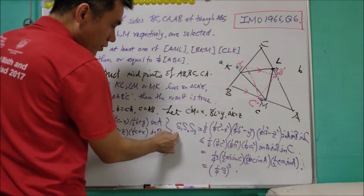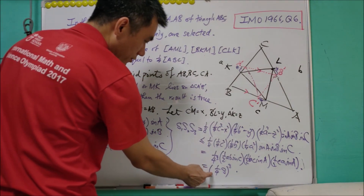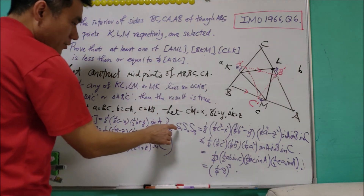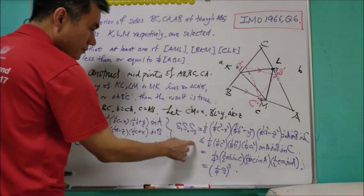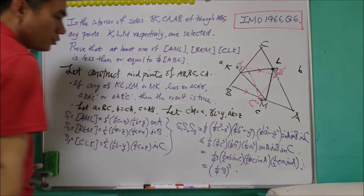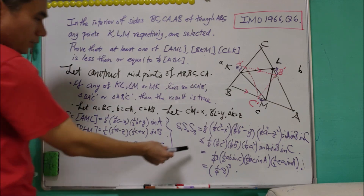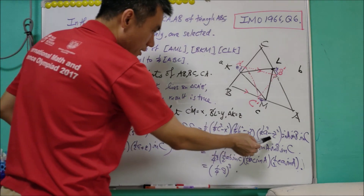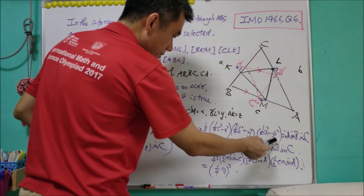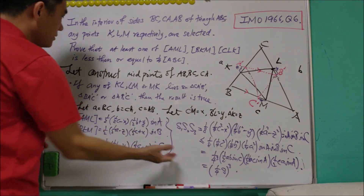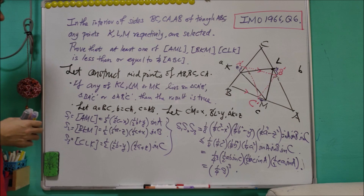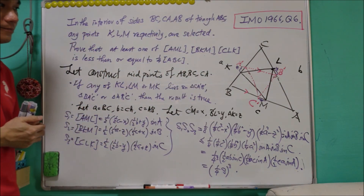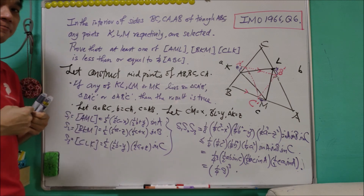Since the product s1 times s2 times s3 is less than or equal to (1/4)S³, it follows that at least one of s1, s2, or s3 must be less than or equal to (1/4)S. Equality holds when x = 0, y = 0, and z = 0. With this, we have proved the result. This is my method for solving IMO 1996 Question 6. Hope you enjoyed it, see you next time!